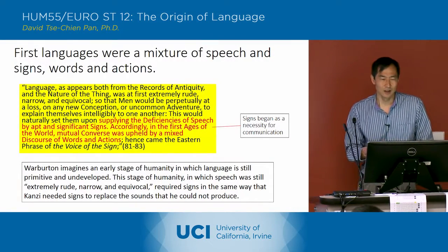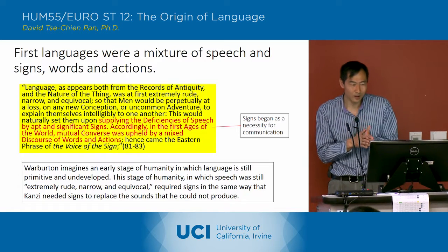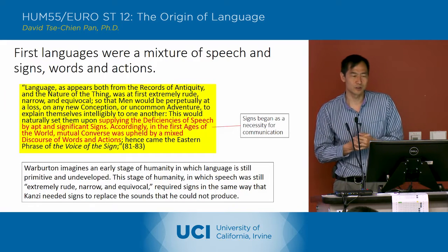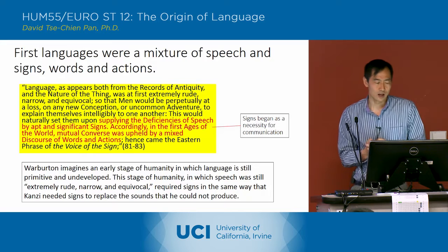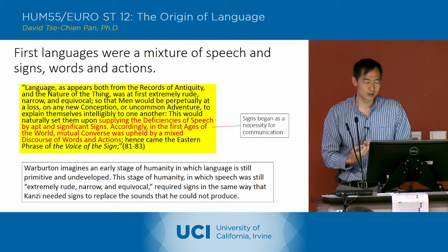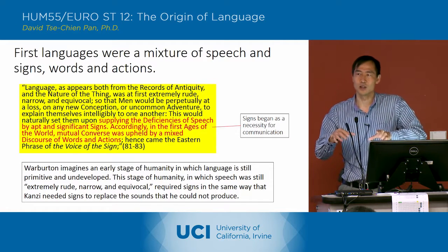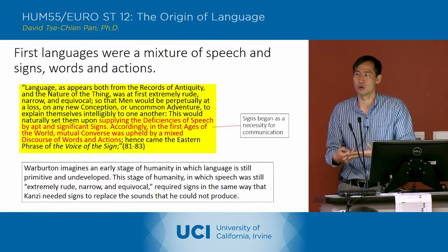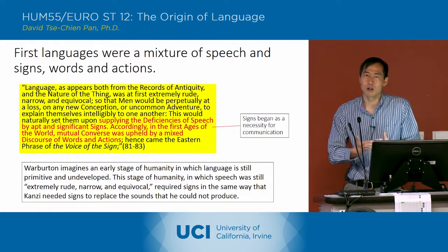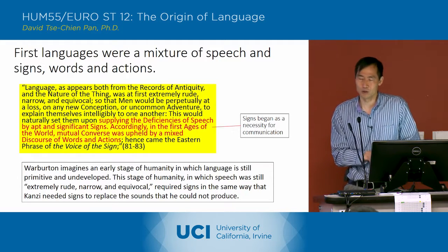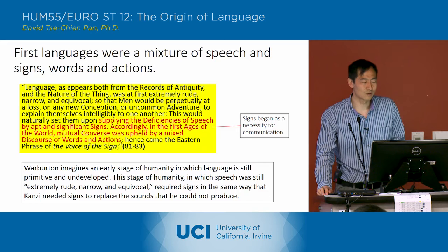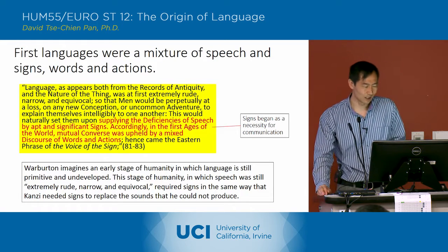So we're going to go to the next section. He says that the first languages were a mixture of speech and signs, words and actions. He's bringing us back to these early languages and saying that not only does the Bible use figures of speech to tell us how language originated, these figures of speech are also embedded in the very origin of language. He says language, as appears both from the records of antiquity and the nature of the thing, was at first extremely rude, narrow, and equivocal.